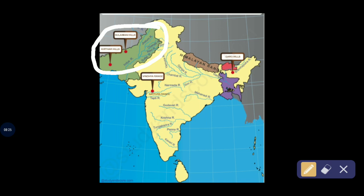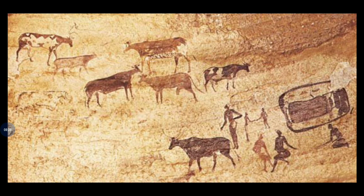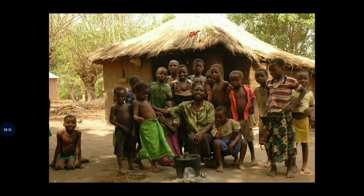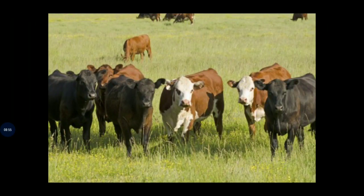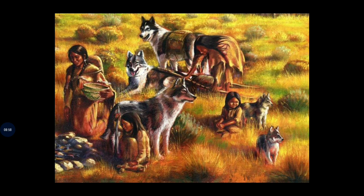Also, man had started to rear and domesticate animals, and started to live in groups. As we know, man is a social animal and likes to live in society. They reared sheep, goats, and cattle. Probably the dog was the first animal that was domesticated for hunting purposes.